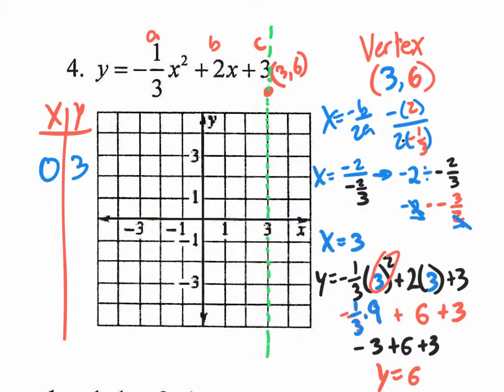So if you graph that, zero on the x, three on the y, you get this coordinate right here. And if you map it over to the other side, one, two, three units away, one, two, three units away, you're one unit off of your graph, but that's okay. Just going to map it over here.